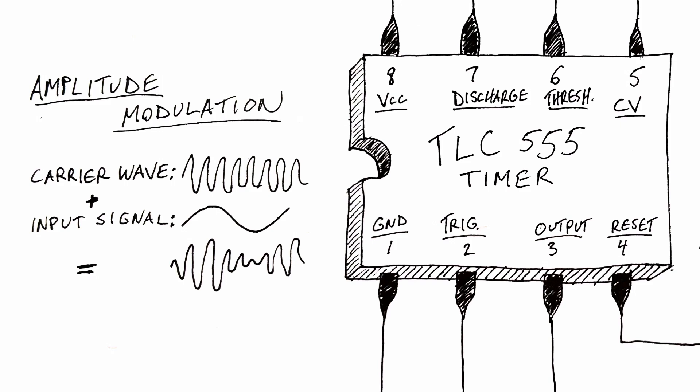Because true amplitude modulation uses a carrier wave and superimposes it on an input signal, which creates a modulated amplitude that goes up and down.